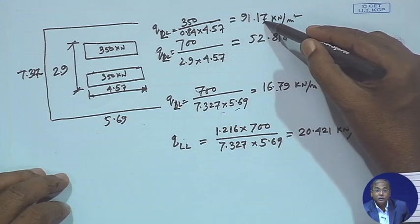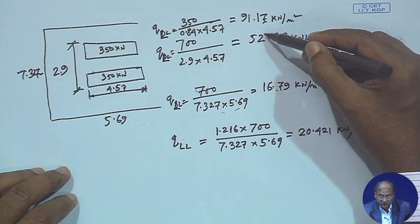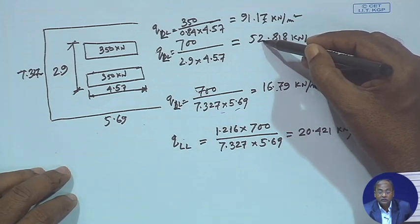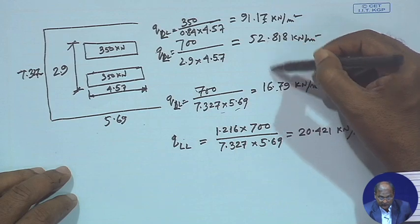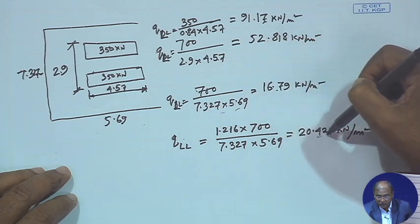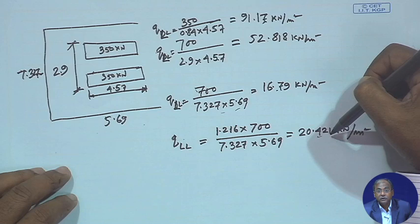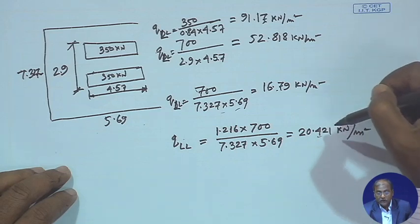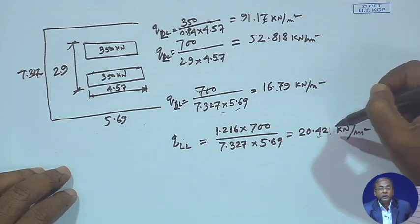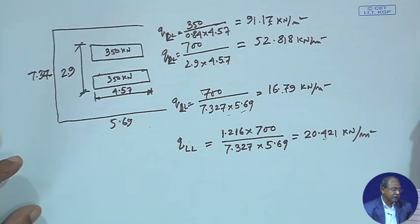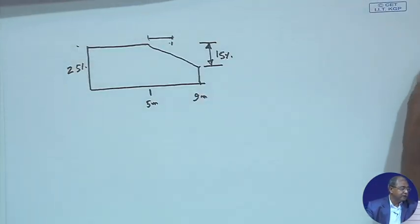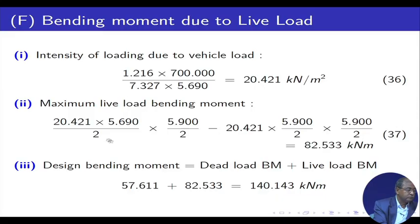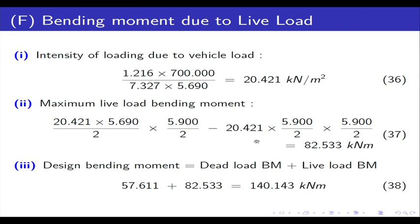Considering both tracks coming down through dispersion, we arrive at 20.421 kilo Newtons per meter square. This is the intensity we shall use in our analysis to find out the bending moment. This is the maximum live load bending moment we are computing here.